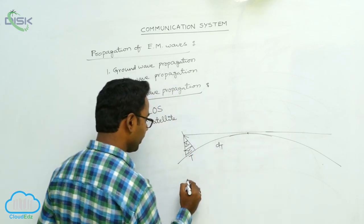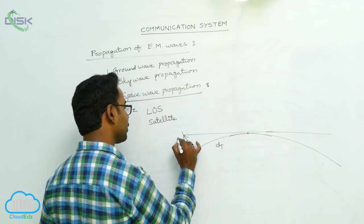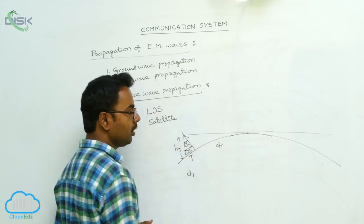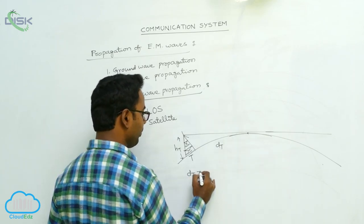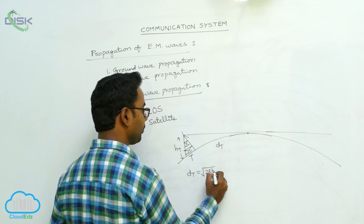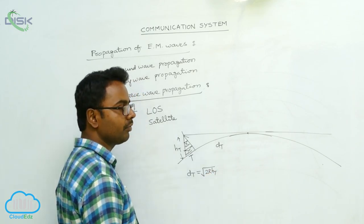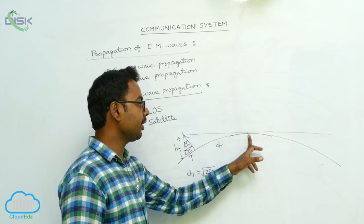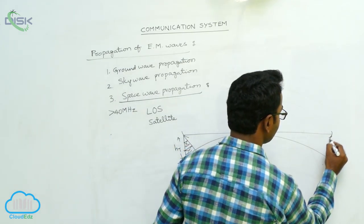Suppose the transmitting antenna has height HT. The distance from the transmitting antenna to the horizon is given by the formula: dt = √(2R · HT), where R is the radius of the Earth. If the signals propagate over the horizon, they can be received by a receiving antenna.